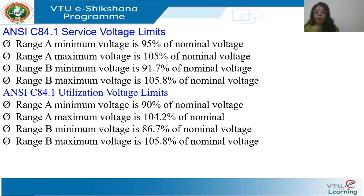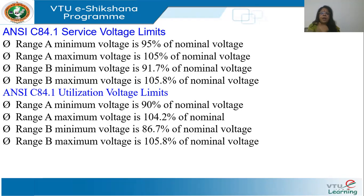For ANSI C84.1 service voltage limits: range A has a minimum of 95% and maximum of 105%, that is plus or minus 5%. For range B, the range is between 91.7% to 105.8%, meaning a larger deviation is acceptable, though not optimal. This applies at the customer's premises.